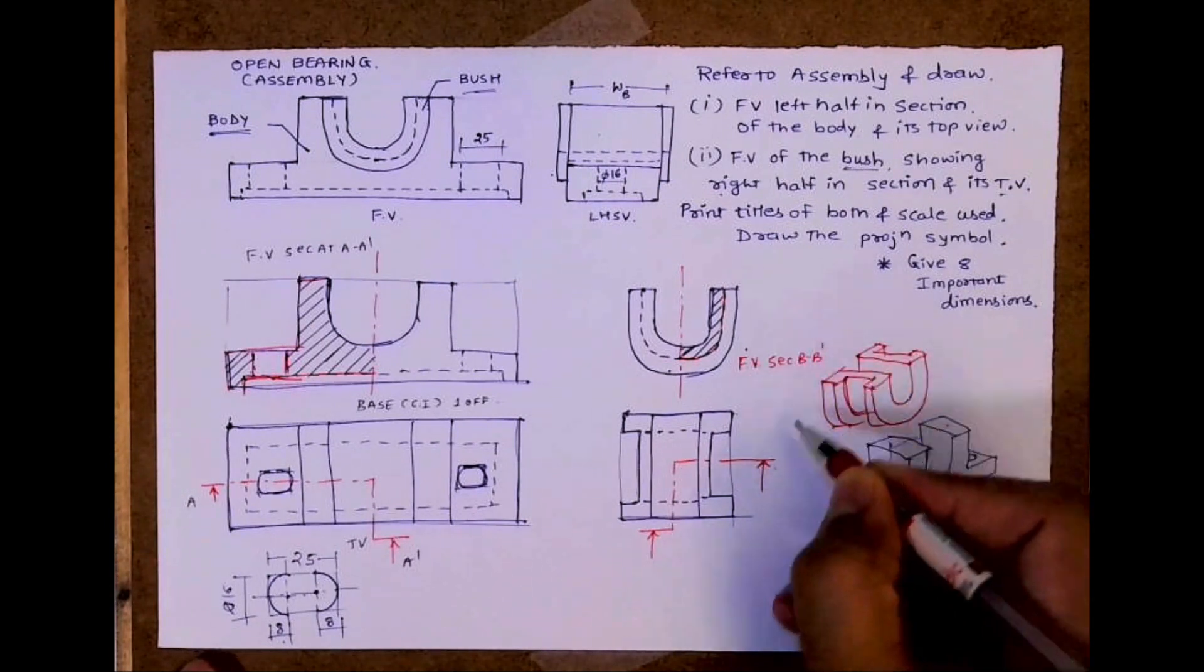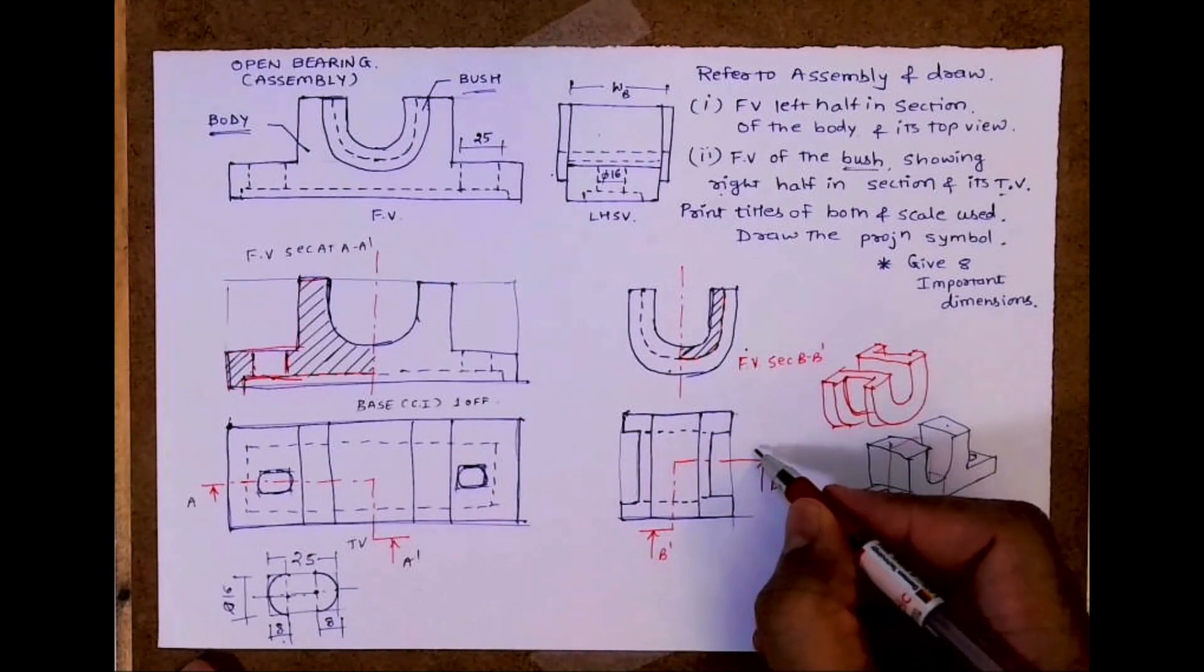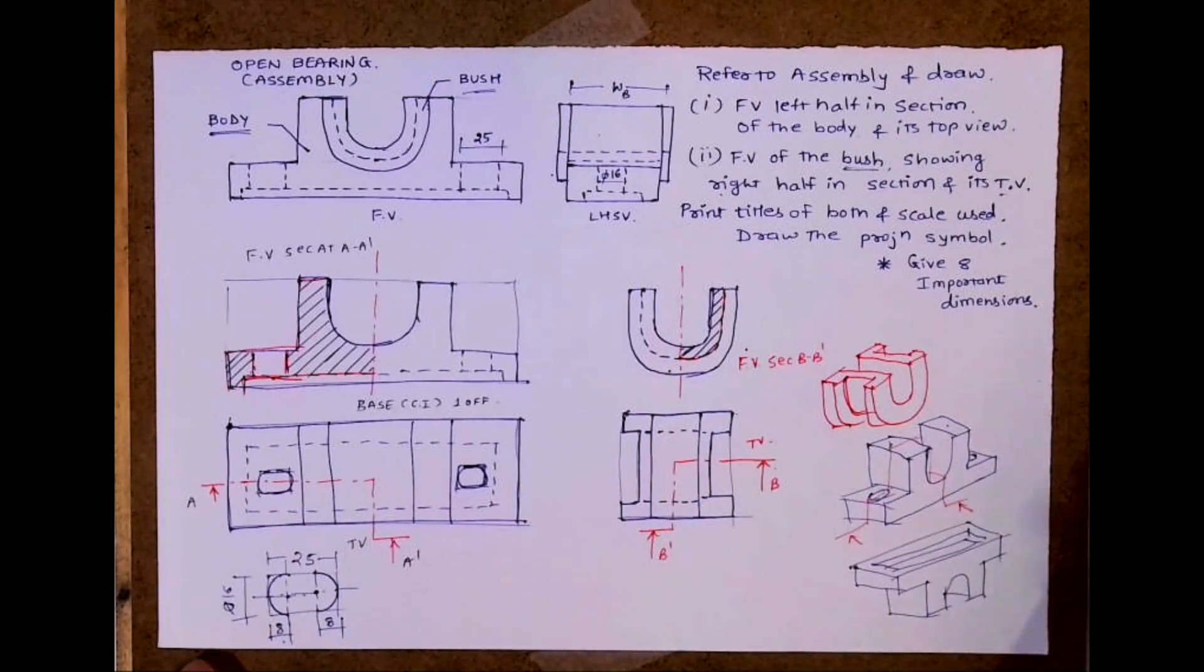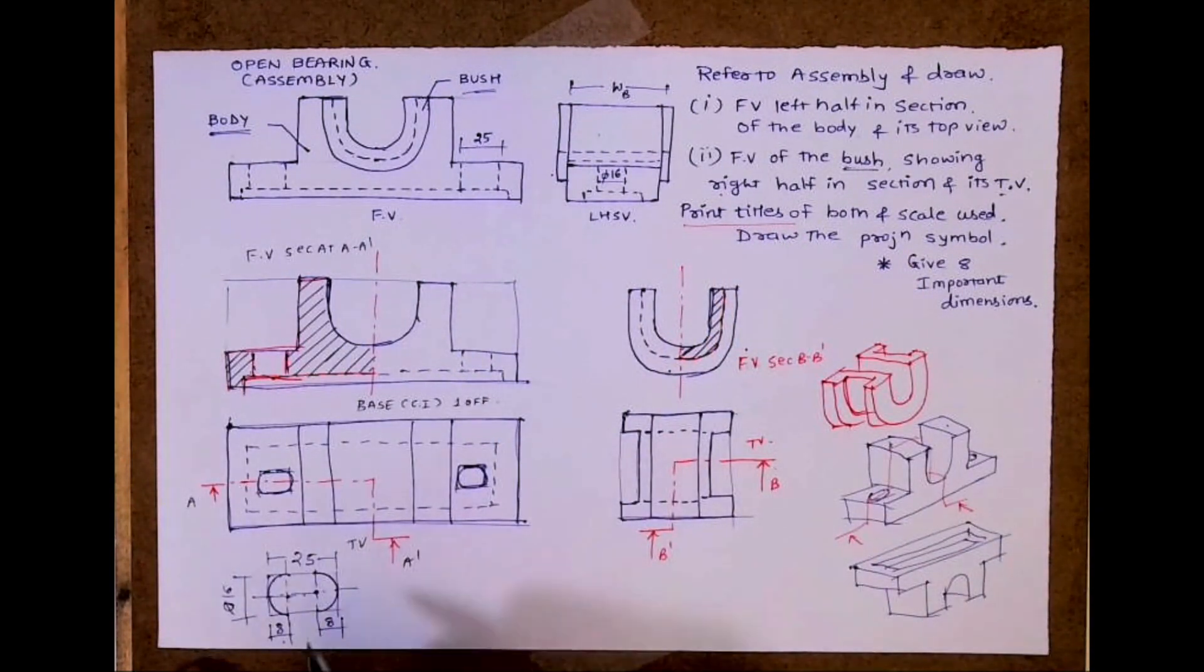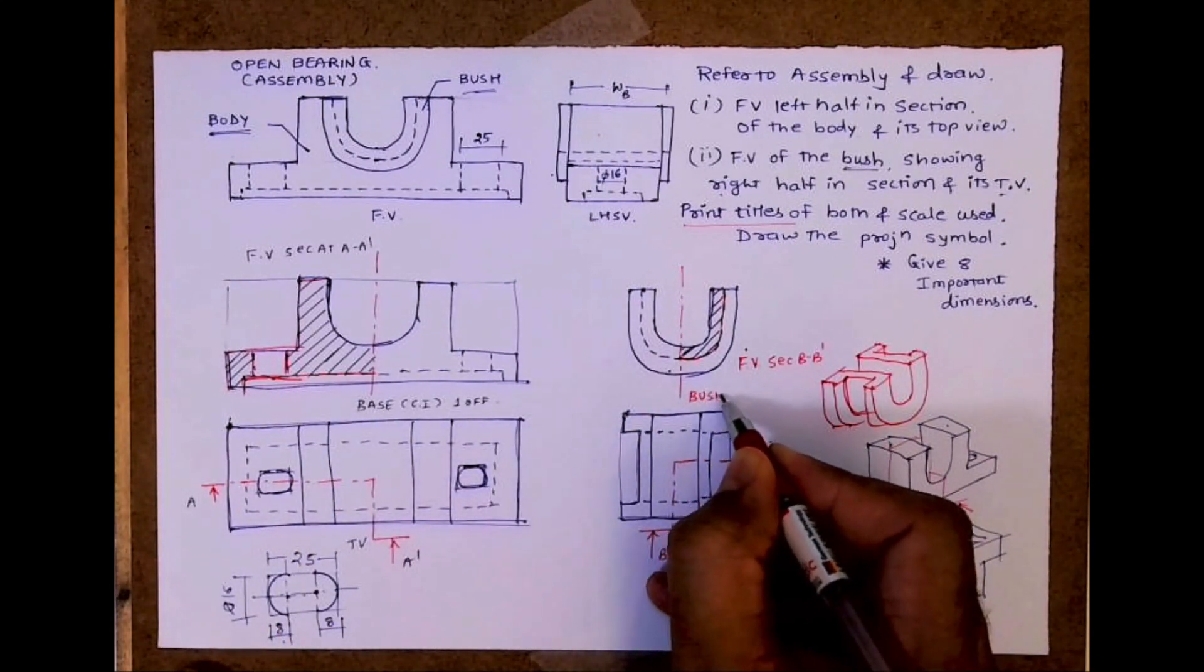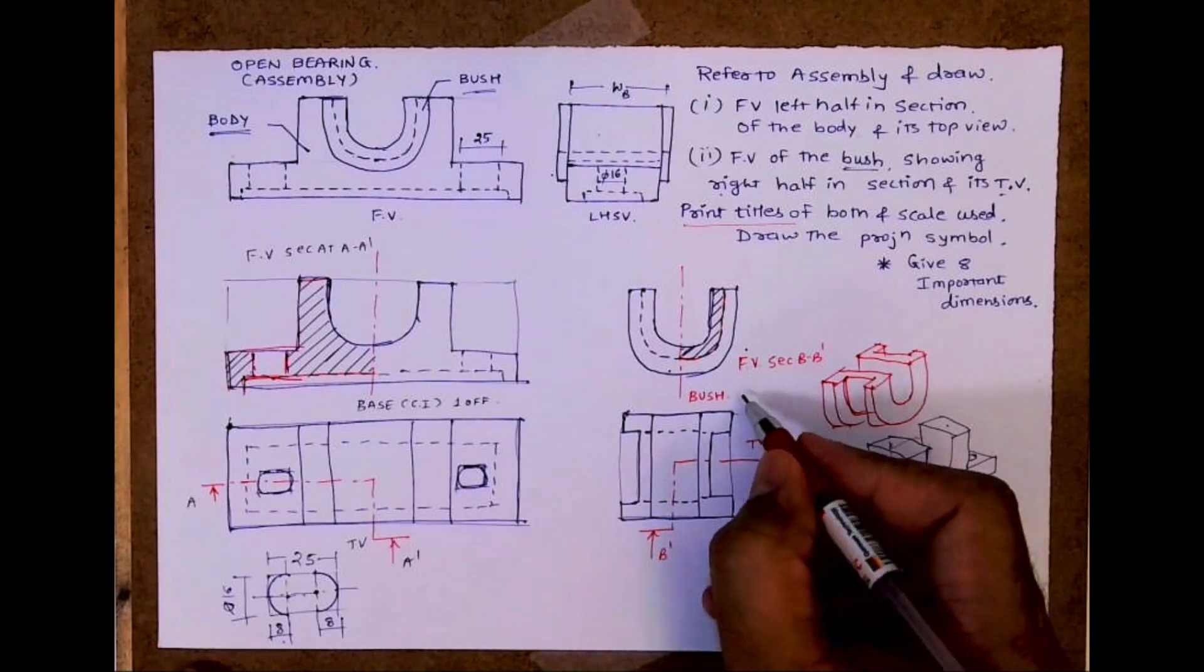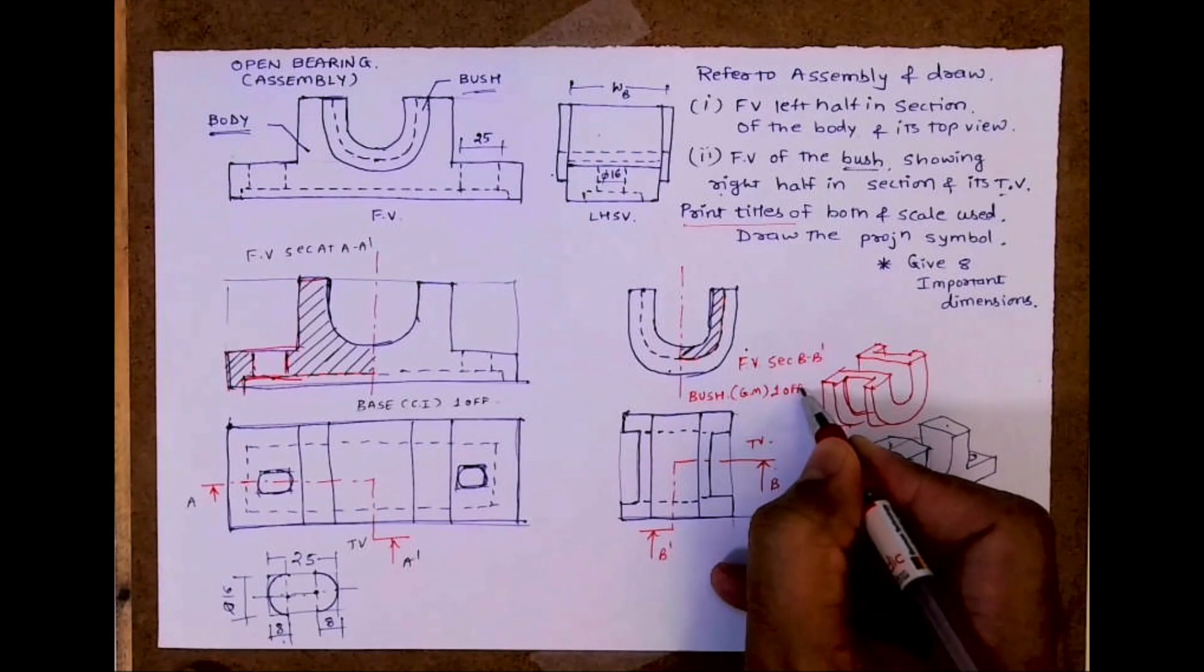So write front view sectional along BB dash. Or we can write half sectional front view, right half in section, that way also we can write. Now print table, that means we need to write naming, base, bush, material is generally gun metal and one half.